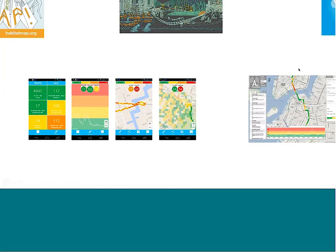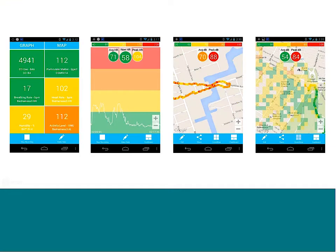Here are some screenshots from the app. On the far left is the sensors dashboard, where each tile represents a stream coming in from the sensors into the phone. In this case we're measuring carbon monoxide, particulate matter, breathing rate, heart rate, humidity, and activity level — it could be any number of different variables. The next screenshot is a graph showing heart rate over time, color coded so that 40 to 85 beats per minute is green and 86 to 130 is yellow.